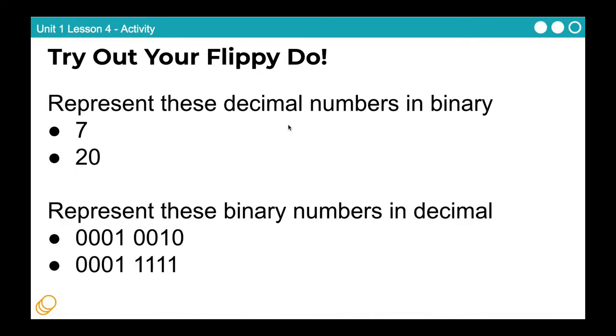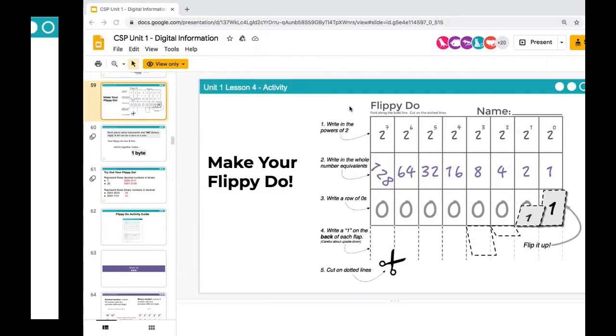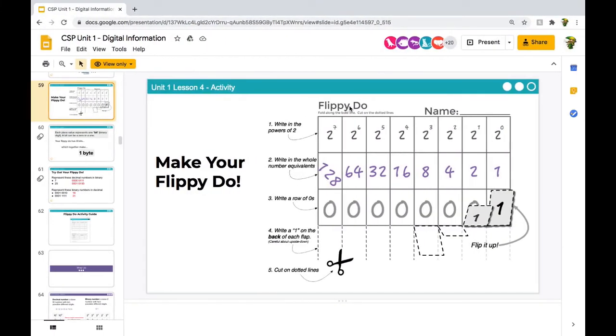Okay, so now that we've used our Flippy-Doo, let's practice with it. So we're going to translate numbers from both decimal to binary and binary to decimal so that you really get a feel for how to translate numbers into and out of both systems. And keep in mind, a decimal number, that just means it's a regular number. So that's the way numbers you're used to using in math class and all over, essentially. So let's focus on the top part first. So represent these decimal numbers in binary. So how do we get the regular number seven into zeros and ones? So I'm going to walk you through seven, and then I want you to practice 20. So here's the method for using your Flippy-Doo.